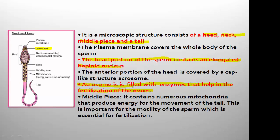The next part is the middle piece, which contains numerous mitochondria. As seen in the image, the middle piece is surrounded by a mitochondrial sheath. We can compare this to the refill of a ball pen — imagine the refill as the middle piece and the spring around it as the mitochondrial sheath. Wherever mitochondria are present they provide energy, and that energy is used in the movement of the sperm tail.